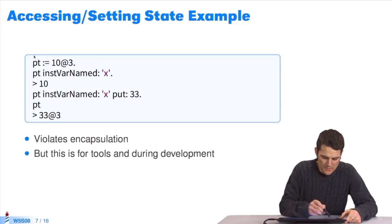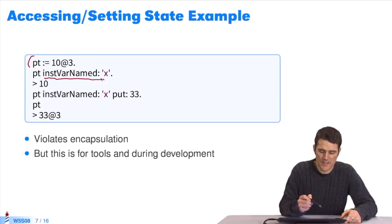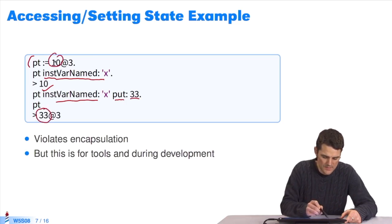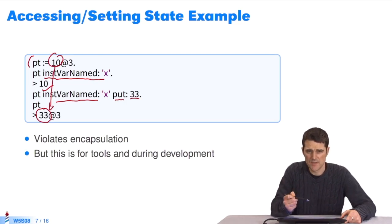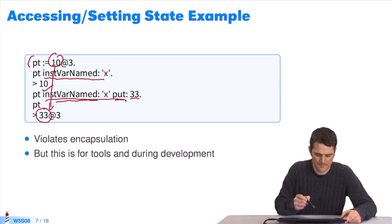Here are some examples. Typically, we create a point, and then we do, the point is 10 at 3, instVarNamed x. I'll get the value of the instance variable called x of this point, which gives me 10. Then, instVarNamed x put 33. I've changed the value of the instance variable x of this point. It's gone from 10 to 33. I've been able to change the inner state of an object by using introspection and intercession, particularly intercession, instVarNamed put. The main point is that we've violated encapsulation.